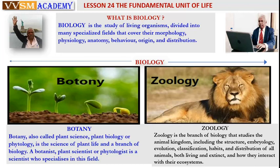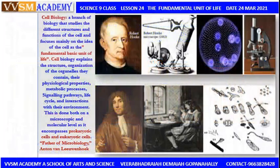A botanist, plant scientist, or phytologist is a scientist who specializes in botany. Zoology is the branch of biology that studies the animal kingdom, including the structure, embryology, evolution, classification, habits, and distribution of all animals — both living and extinct — and how they interact with their ecosystems.